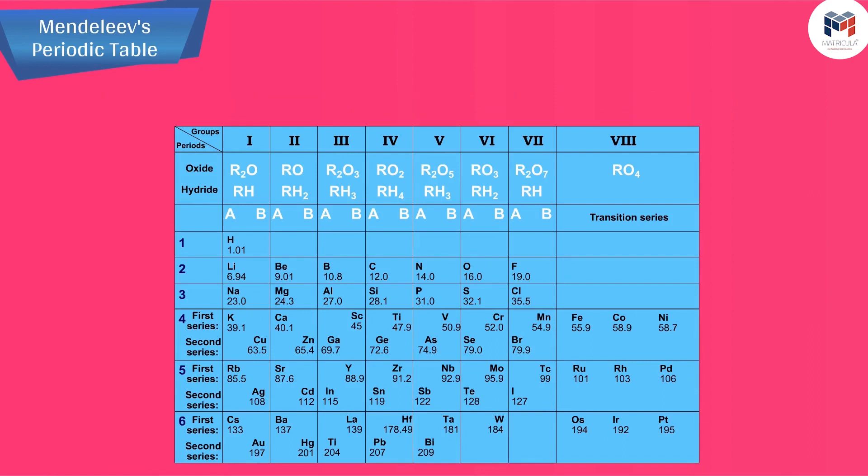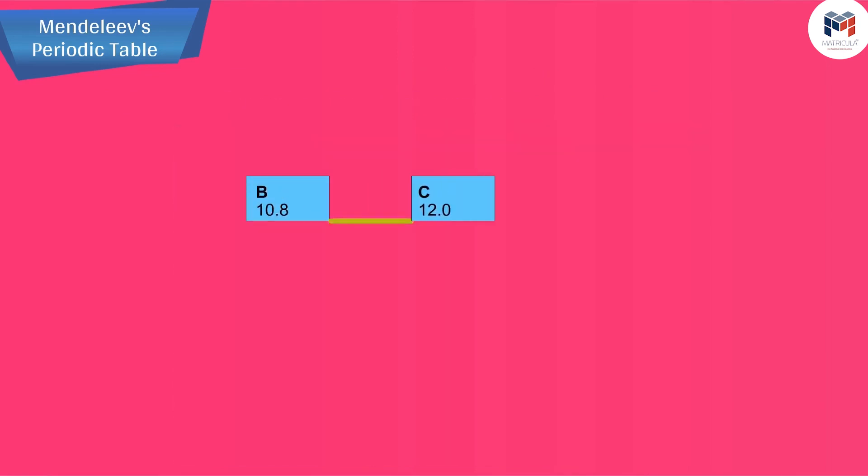Another problem was that the atomic masses do not increase in a regular manner in going from one element to the next. So it was not possible to predict how many elements could be discovered between two elements, especially when we consider the heavier elements.